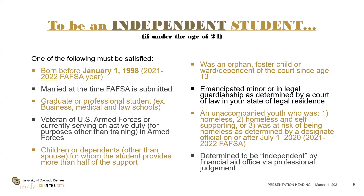If you are approved based on independency status and parental information is not required, you have to recertify that information every single year until you reach the age of 24. Whatever documentation you submit to the financial aid office, keep a copy of it because you will have to resubmit some of that information for subsequent years.